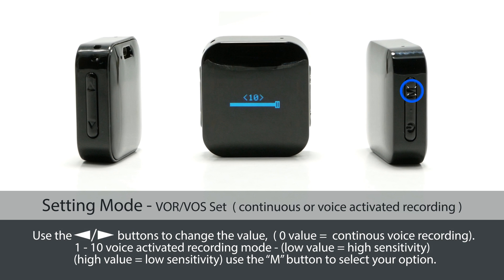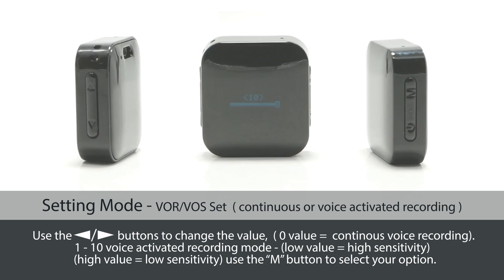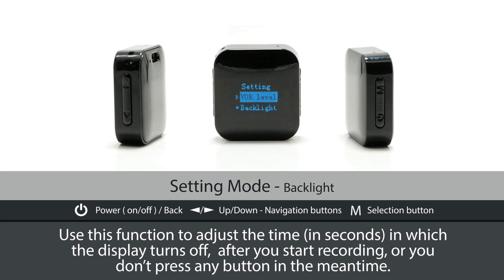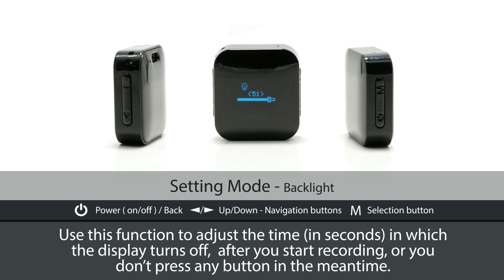Use the M button to select your option. Backlight. Use this function to adjust the time, in seconds, in which the display turns off after you start recording or you don't press any button in the meantime.